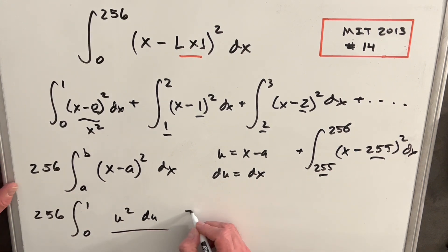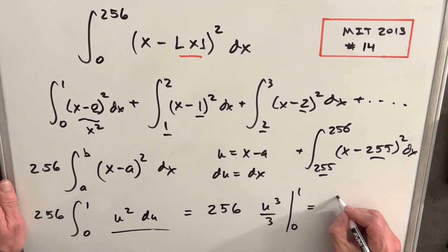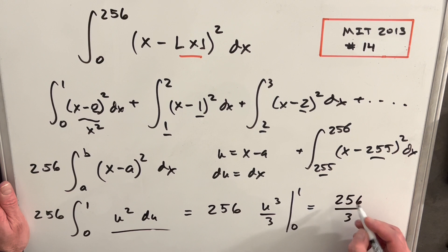Now we're in good shape to finish this off. We're going to have a 256 in front. We're going to integrate this. We're going to have u cubed over 3 evaluated from 0 to 1. Now this 0 value is just going to be 0, so we're just plugging a 1 in here. 1 cubed is going to be 1 third. So all we're left with for an answer is 256 over 3.